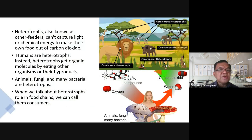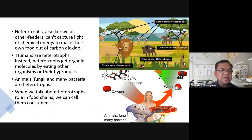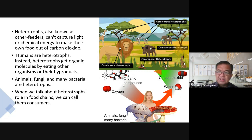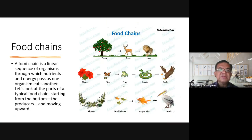Heterotrophs, also known as 'other feeders,' cannot capture light or chemical energy to make their own food. Instead, heterotrophs get organic molecules by eating other organisms or their byproducts. Animals, fungi, and many bacteria are heterotrophs. When we talk about heterotrophs' role in the food chain, we call them consumers.